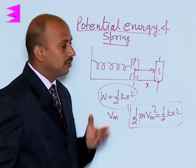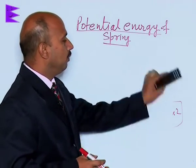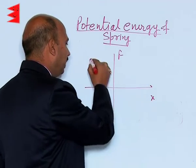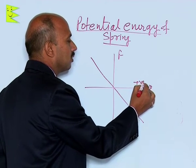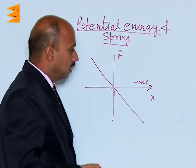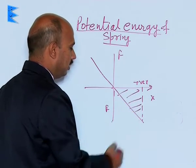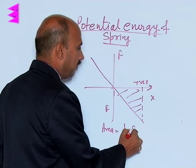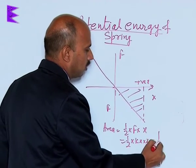This process continues — conversion of potential energy to kinetic and kinetic to potential. If you draw a graph of F versus x, when x is positive the force is negative, and when x is negative the force is positive, giving a straight line through the origin with negative slope. The area of the triangle formed is ½ × F × x = ½ × kx × x = ½kx². So by calculating this area, you can also find the energy stored in the spring.